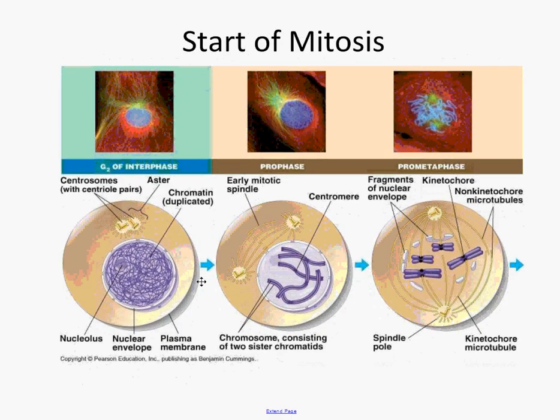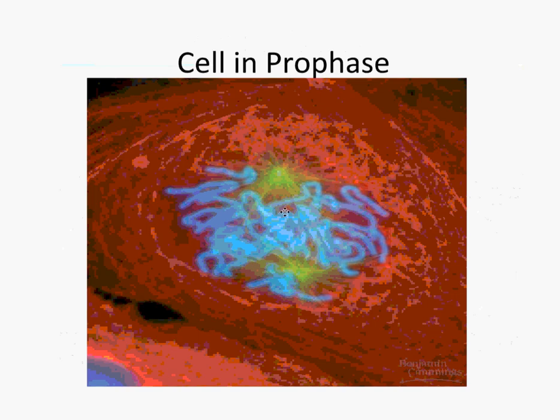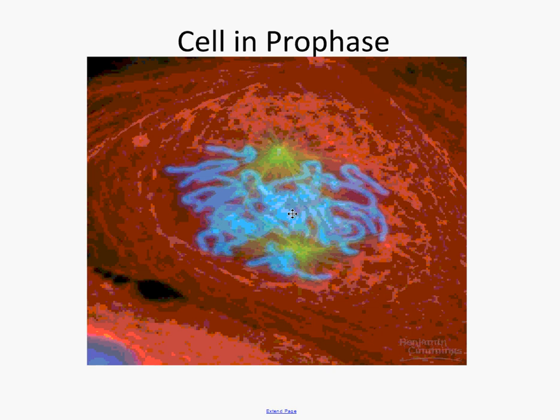That brings us to mitosis. Mitosis is divided into four phases. Prophase, metaphase, anaphase, telophase. We will quickly go through them here. Prophase is the first phase of mitosis. During prophase, you can immediately see what's going on here. Well, of course, our chromatin condenses into chromosomes. The nucleus is gone.